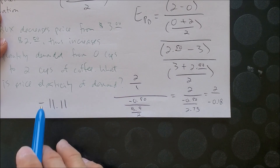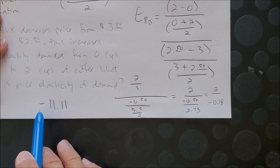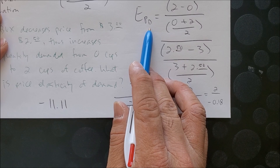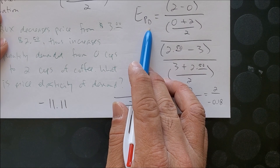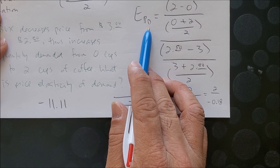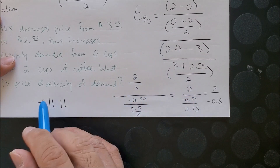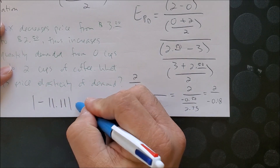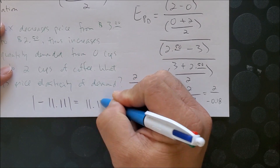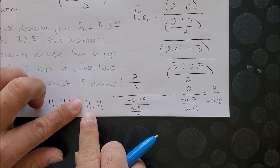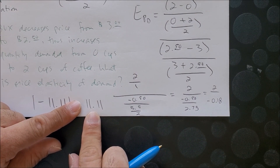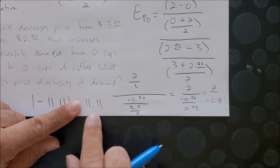Notice that we have a negative sign because this refers to demand — price and quantity have an inverse relationship. So we must take the absolute value to get a final answer of 11.11. This number is greater than 1, so this is highly elastic. The greater the number, the more elastic it is.